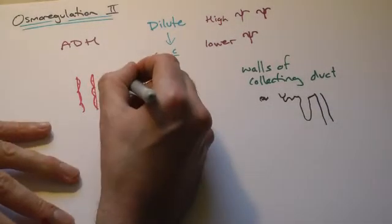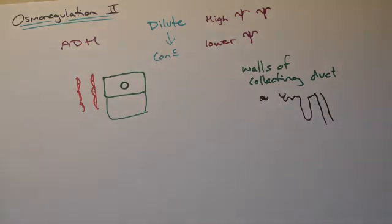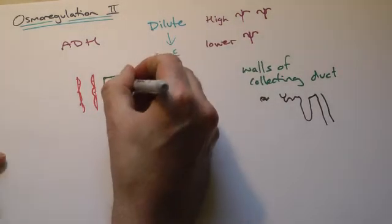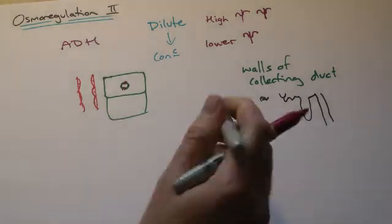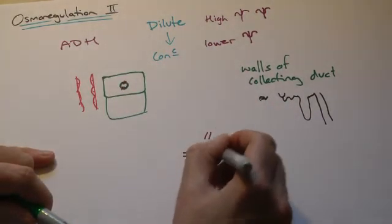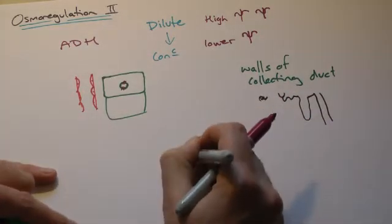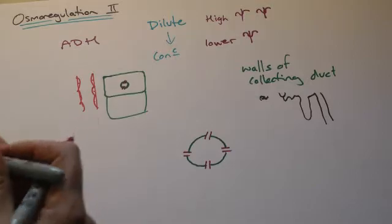Inside of these cells, there are vesicles which contain, I'll make this a bit bigger in a second. I'll draw a larger version of this. These vesicles in the membrane on the outside contain these proteins called aquaporins.